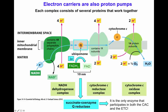The ubiquinone molecule is a soluble hydrophobic molecule that shuttles electrons between the NADH dehydrogenase complex and the cytochrome C reductase complex. It can also bring electrons from FADH2 into the system. There is no transfer of protons across the succinate coenzyme Q reductase. The succinate coenzyme Q reductase system is composed of a complex of four proteins.